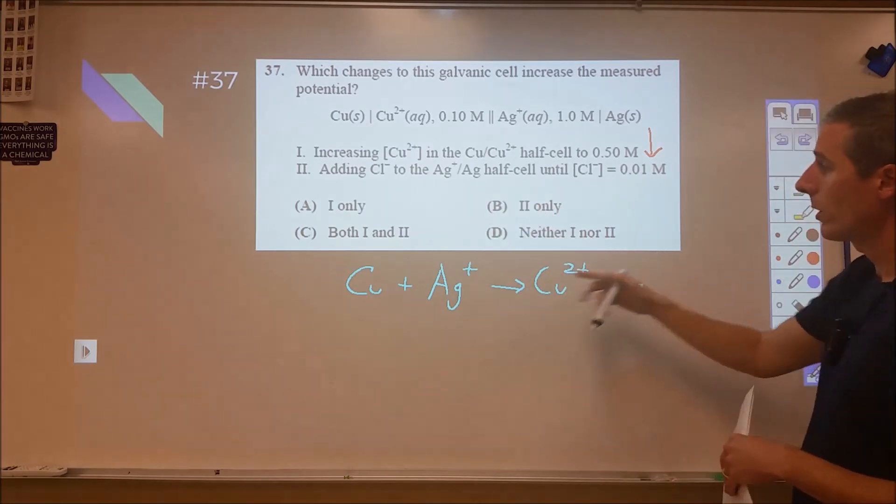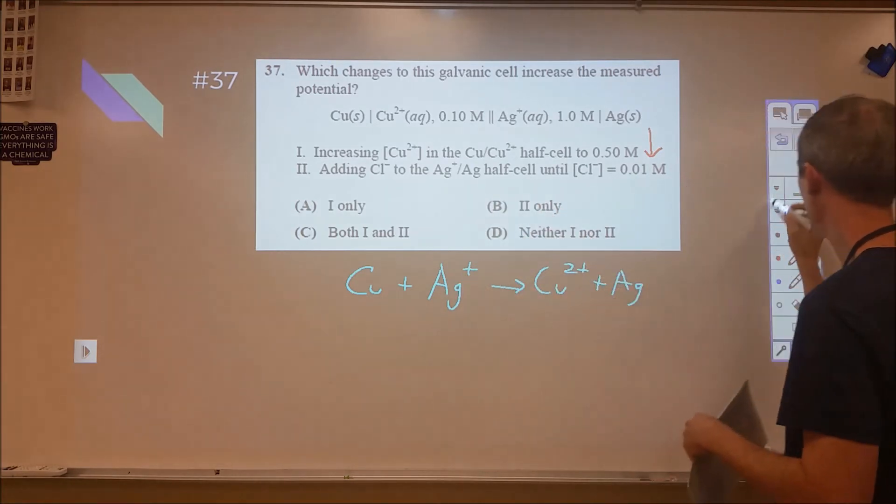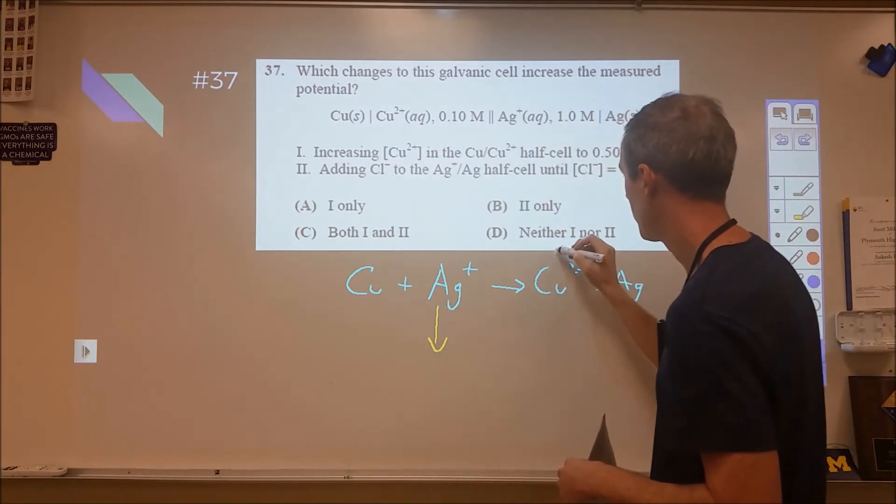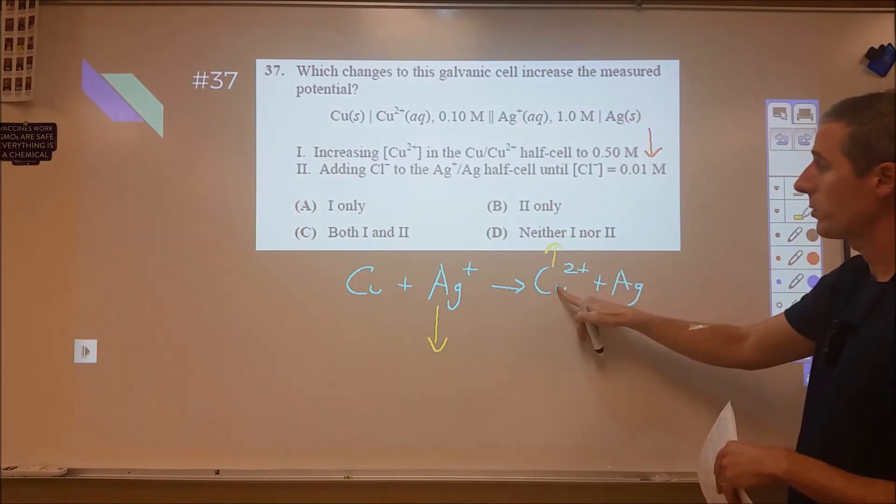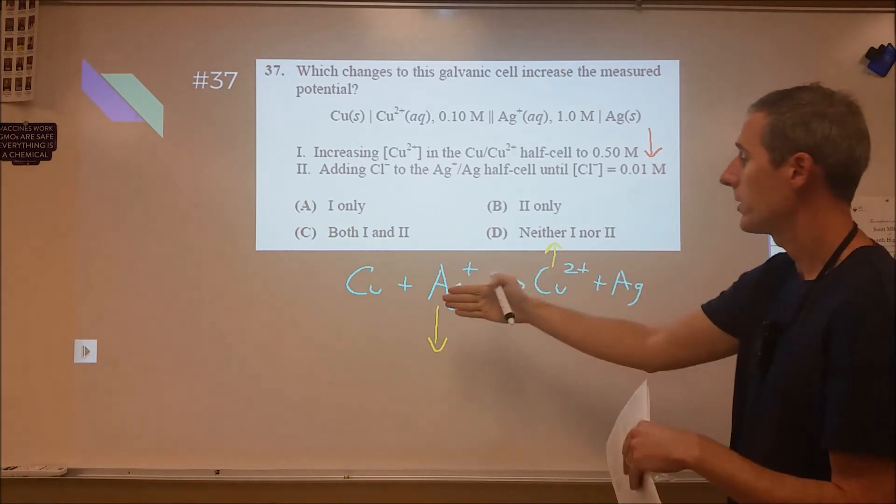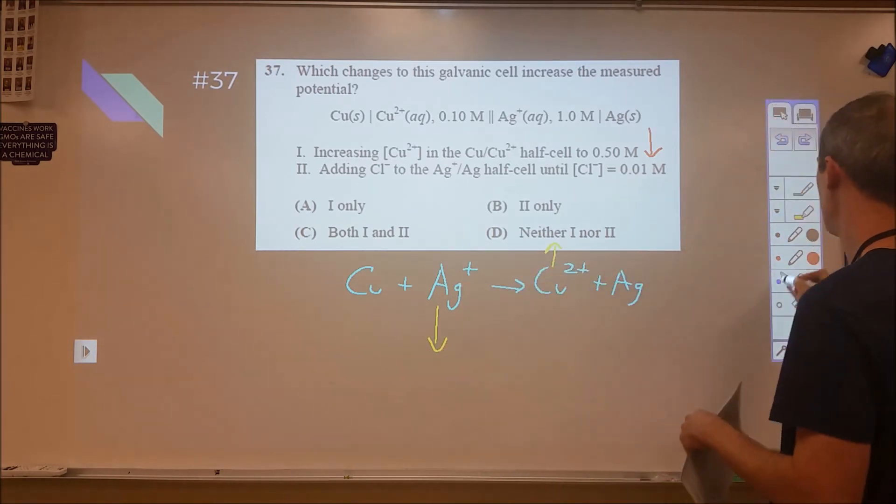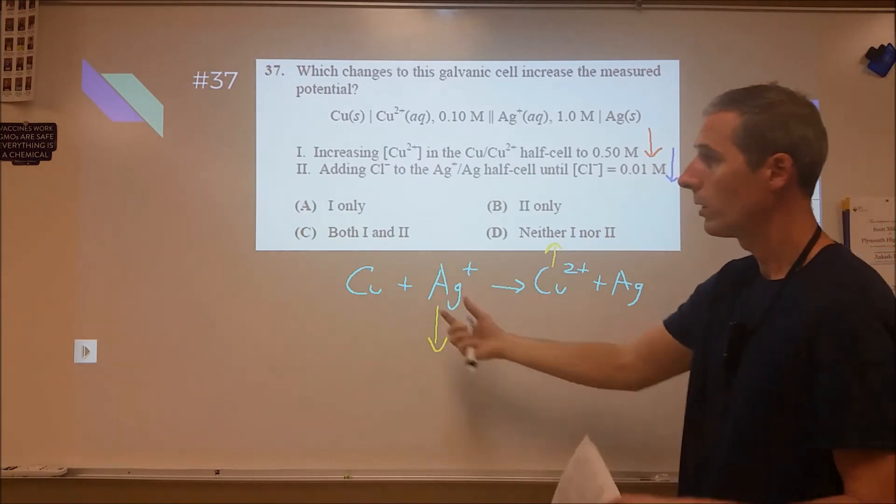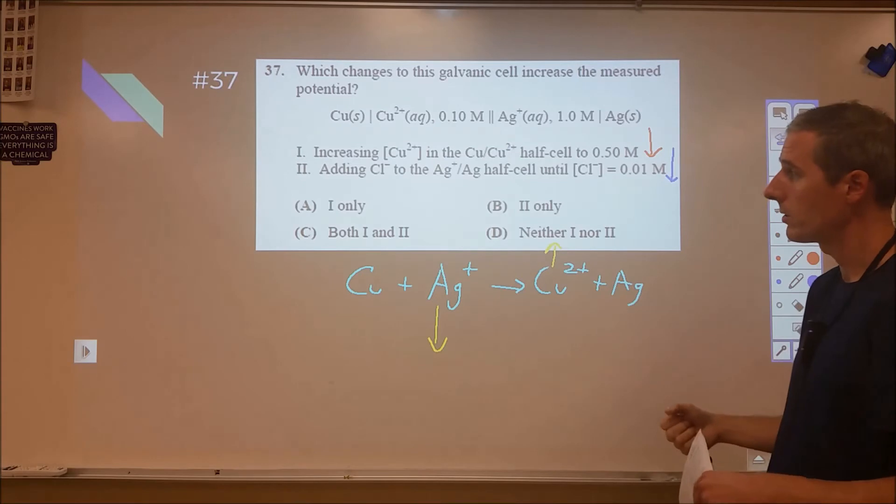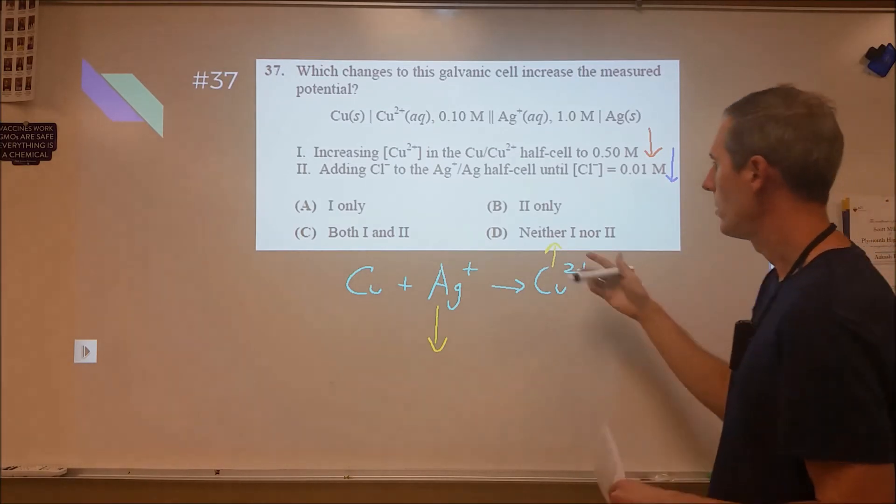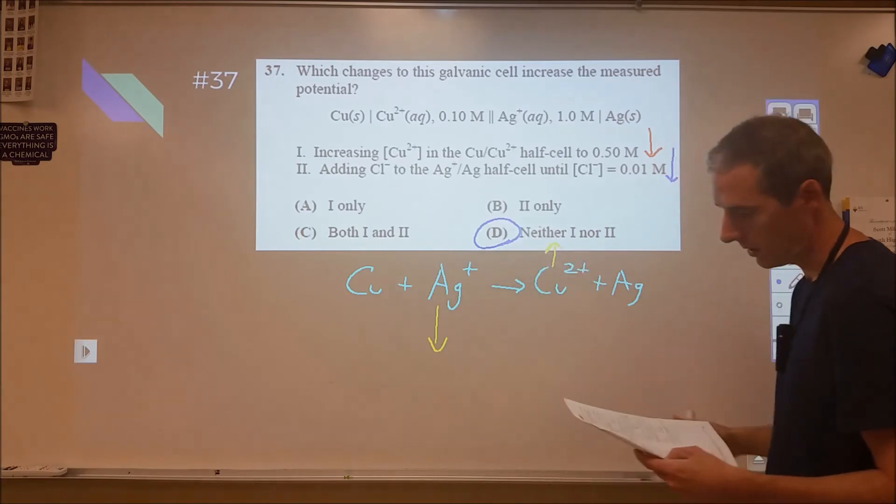The second one, the adding of the chloride is going to cause this to precipitate out, which means that this concentration is going to go down. As in part one, this concentration was going up. In this one, the concentration of this goes down, and that's again going to cause a shift back to the left, which is going to result in a decrease in the voltage. Or alternatively, we have fewer positively charged cations pulling on those electrons, and therefore, the energy gained by the electrons drops. So, neither of these are correct, and D is our choice there.